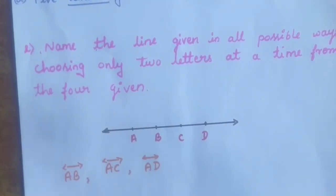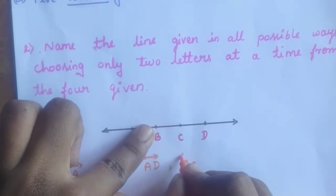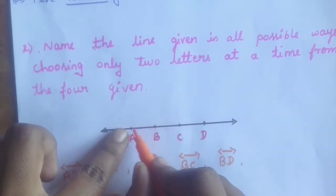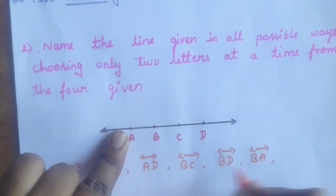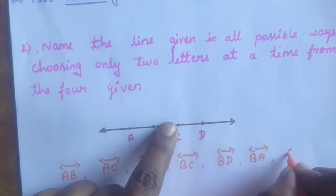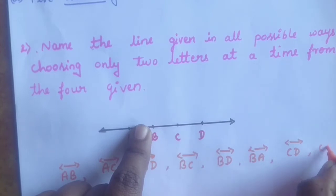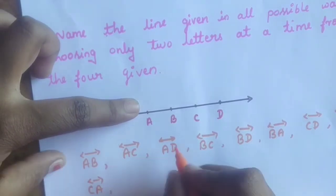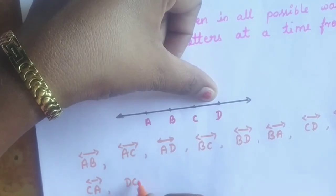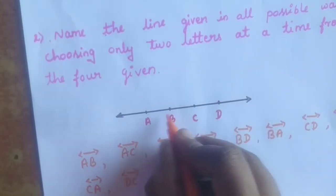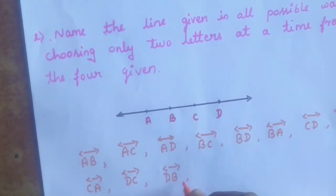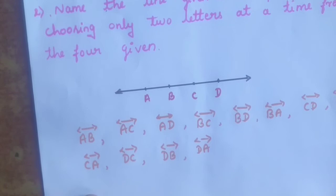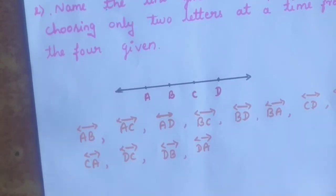Continuing all possible combinations: BC is one line, BD is one line, BA is a line. Then CD, CB, CA. And next: DC, DB, DA. So these are all the possible ways of naming the line taking two letters at a time.